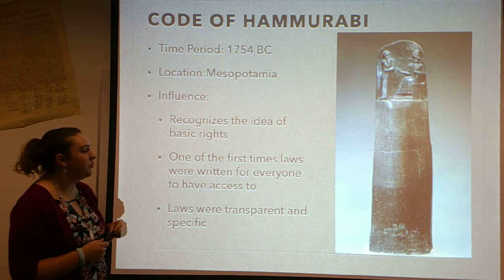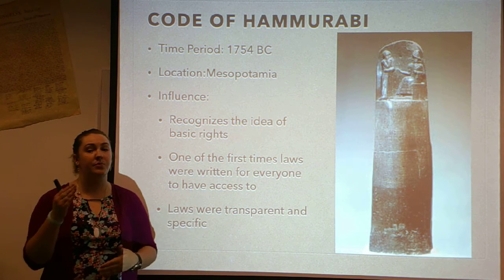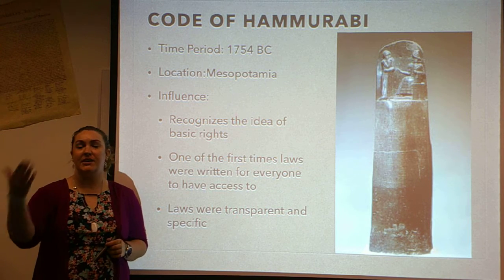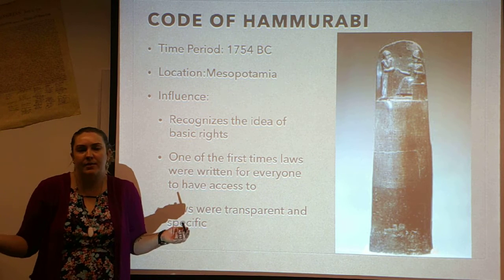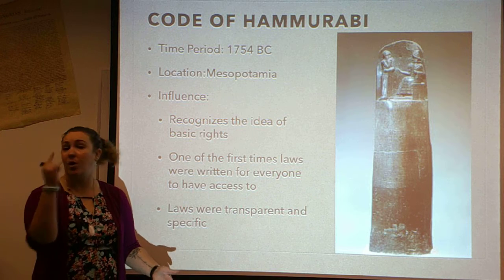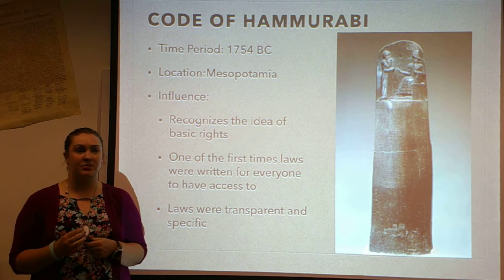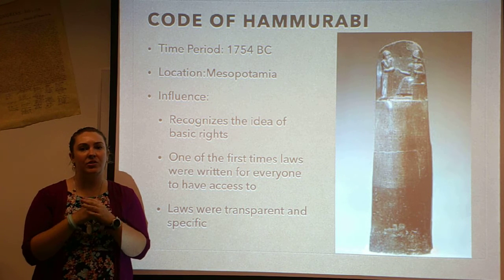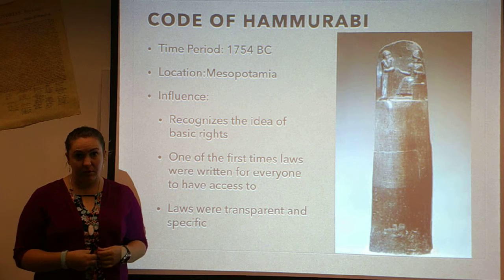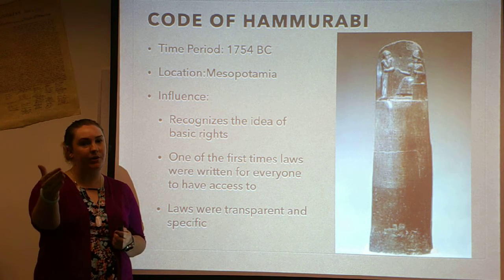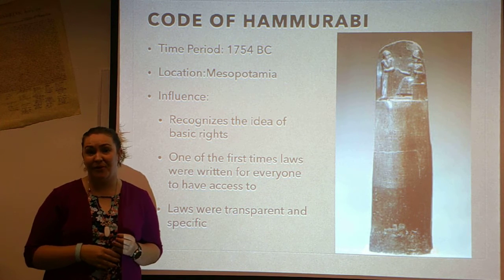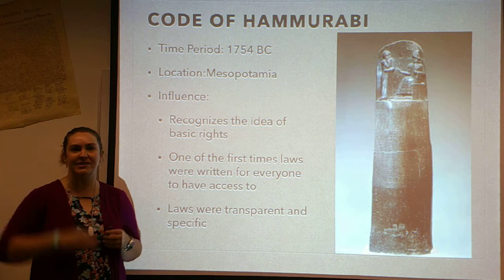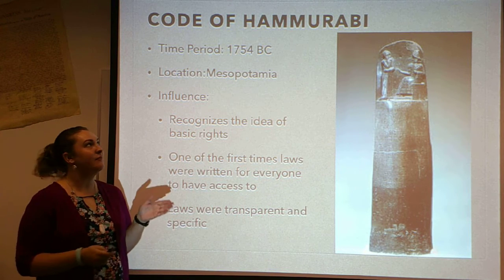It's actually one of the first times that laws were written for everyone to have access to. Before this, somebody would come out and deliver the laws, and you were just supposed to remember them. They weren't posted anywhere for anyone to see. These were chiseled onto a huge statue all the way around, so everyone had access to them. Lastly, the laws were transparent and specific. The more specific a law, the easier it is to follow. The more transparent a law, you know what you're doing — whenever I'm driving 45 miles an hour down Main Street, I know I'm breaking the law because it says speed limit 35. That's transparent. I know exactly what law I'm breaking. So those are three ways it influenced our Constitution.